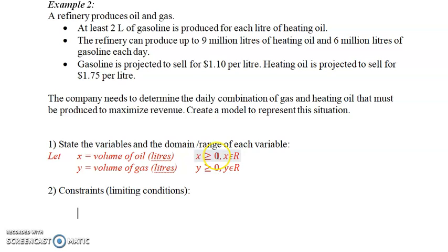So we say that x has to be obviously less than or equal to nine million. Another constraint is going to be the liters of gas, and y represents gas, and that was six million liters. So if it's up to that, you can only produce that amount.